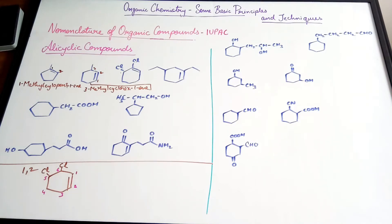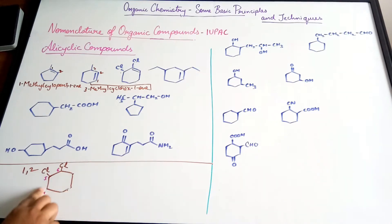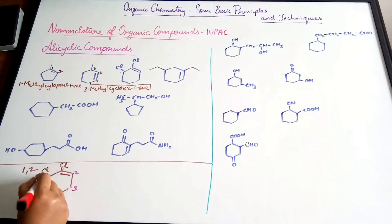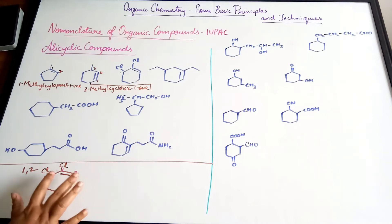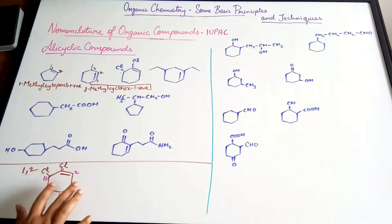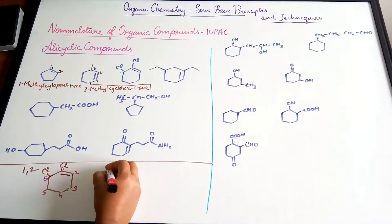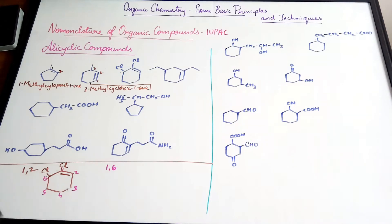With this numbering the double bond gets the lowest locants — positions one and two — and the chlorine atoms are at positions one and six.